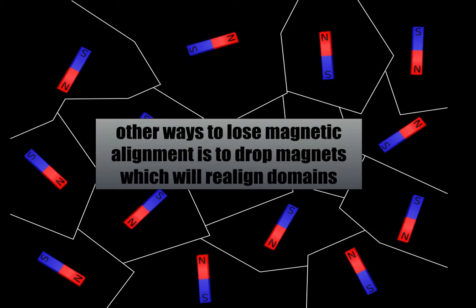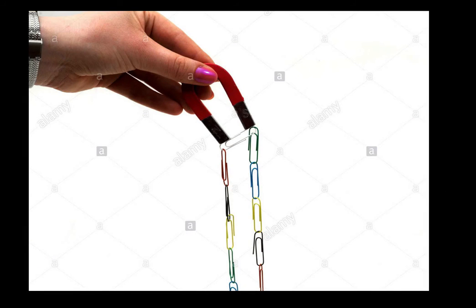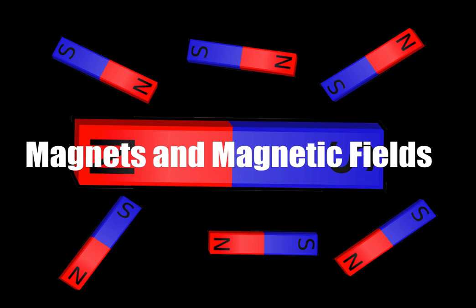Other ways to lose magnetic alignment is to drop magnets, which will realign the domains. This is why you should be careful with the magnets — try not to drop them, because dropping them will realign those magnetic domains and a magnet will slowly lose its magnetic fields. Here's an image of temporary magnets — you can attach one paperclip to the magnet, which will then cause that paperclip to become a magnet with its domains all aligned in one direction. Well, that does it for this discussion. I hope this helped, and good luck in your studying.